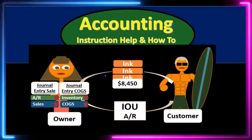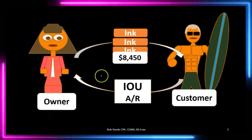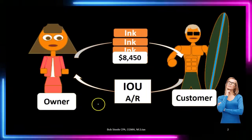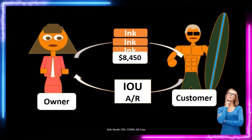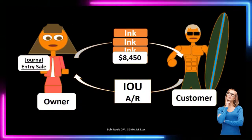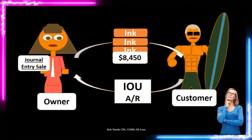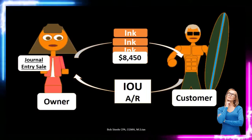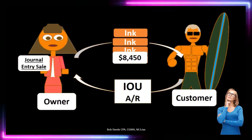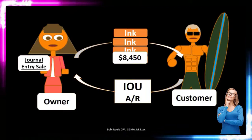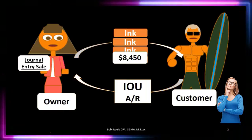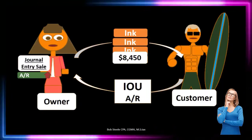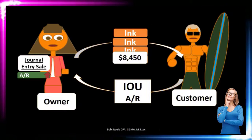First, we're going to provide the ink cartridges to the customer. The customer is going to give us an IOU for those ink cartridges. We will record this journal entry in two parts. The first part is the journal entry for the sales side of the transaction. When we have given the ink cartridges, we as the seller have completed the job, so we record the accounts receivable going up — the customer owing us money.